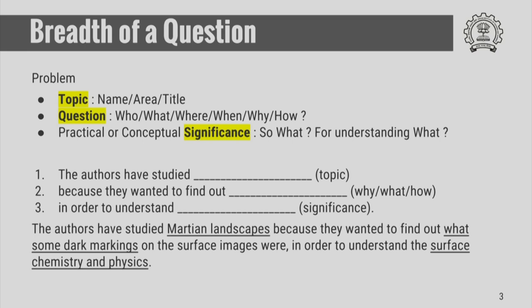The topic is basically a broad area — it could be some keywords from the title. The question is essentially an interrogative statement, as said before: who, what, where, when, why, or how. The significance is of two types: one could be a practical significance, and the other a conceptual significance. Practical significance means it is useful for something day to day. Conceptual significance is something that helps you understand something else, which may in turn be useful in a practical way — it may not have direct practical significance, but it leads to something that does.